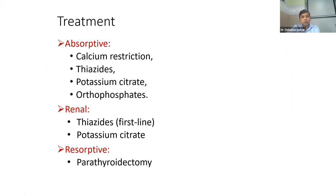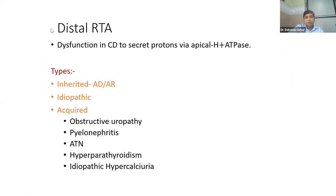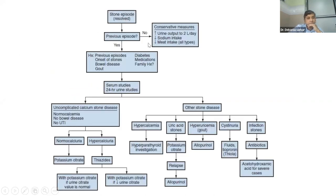This is a summary. If a patient has a stone episode, check if there is any previous episode. If no previous episode and treated, the patient goes on normal dietary protocol — less sodium, adequate fluid intake. If the patient is a recurrent stone former, or has bowel disease, gout, diabetes, certain medications, or family history — these are high-risk patients who need 24-hour urine studies along with serum studies. First-time stone formers do not need 24-hour urine studies. After doing this evaluation, you will be able to know what is the stone composition and what biochemical abnormality the patient has.